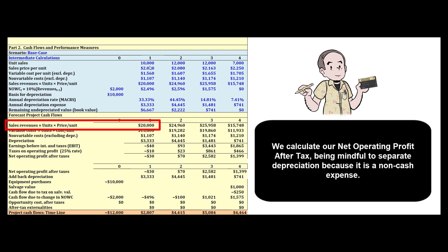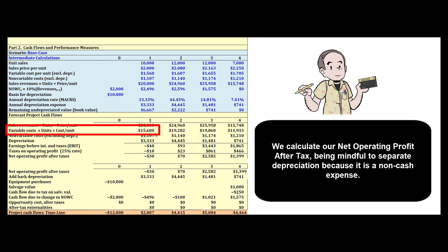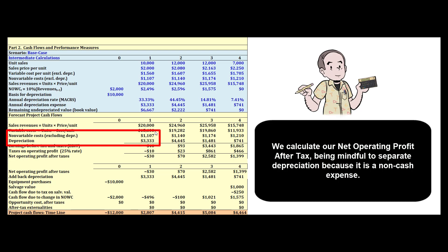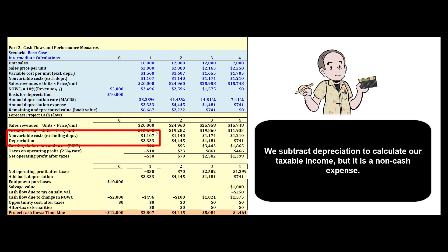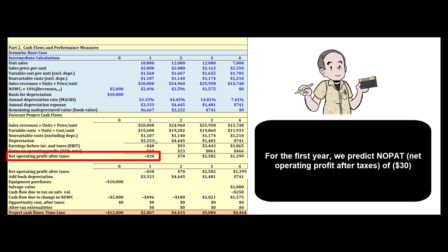If we sell 10,000 units at $2,000 a unit, sales will be $20 million. Variable cost per unit times units gives us $15.6 million, minus fixed costs — but we separate out depreciation, which is a non-cash expense. We can't ignore it because it reduces our income taxes, but it is not a cash outflow. In year one, with depreciation of $3,333,000, we're actually going to lose money — but that provides a tax deduction for our other operations.